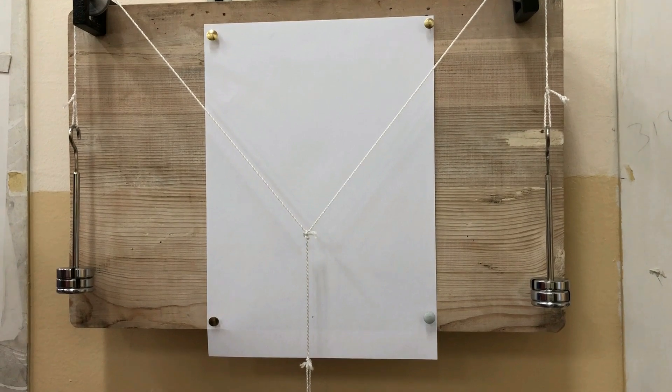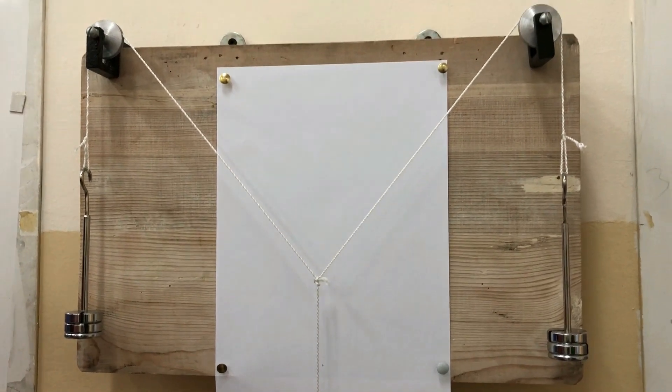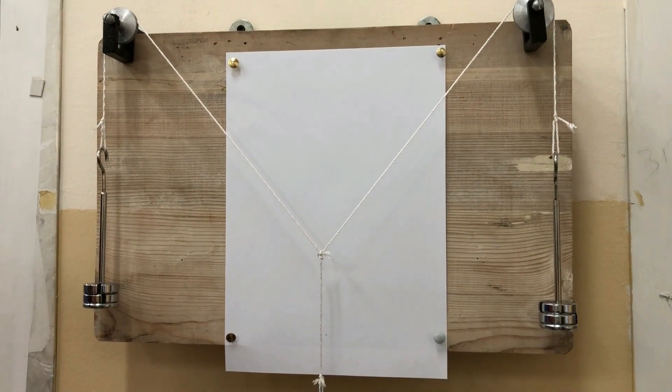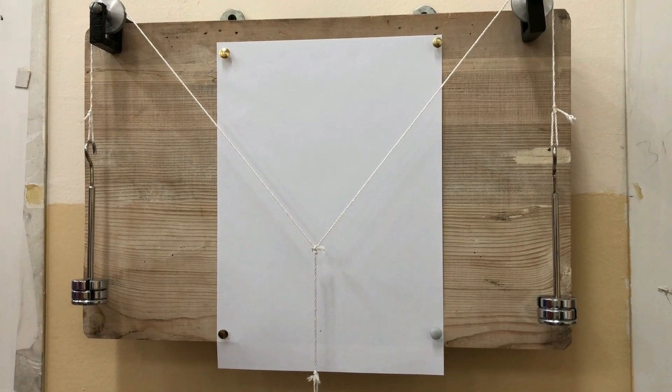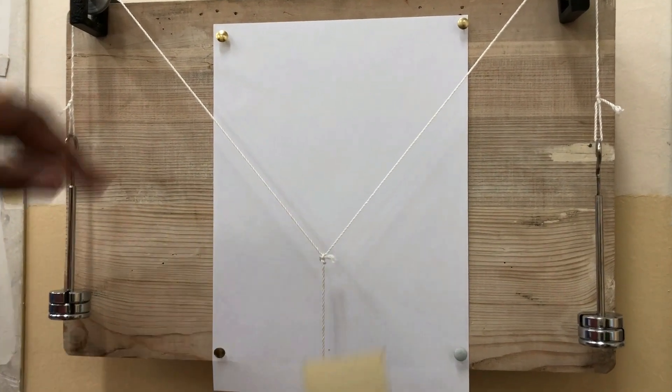Now place a mirror strip beneath the thread and mark the points with the pencil at the edges of the mirror where its image coincides.